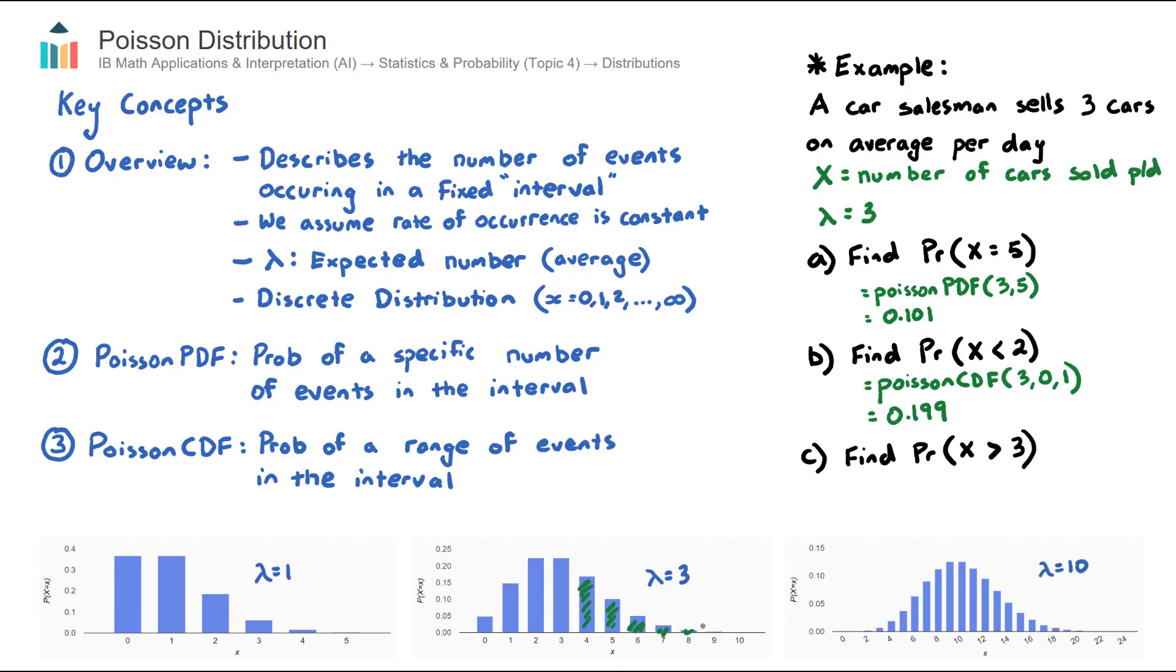You can see here when our expected number is 3, by the time we get to about 7 or 8, the probabilities get very, very small.